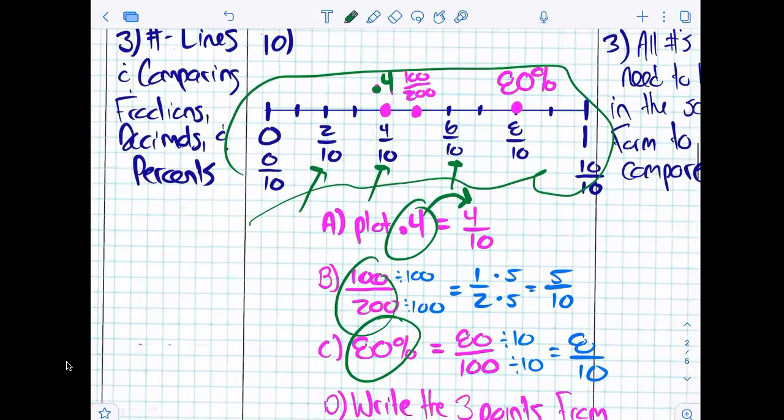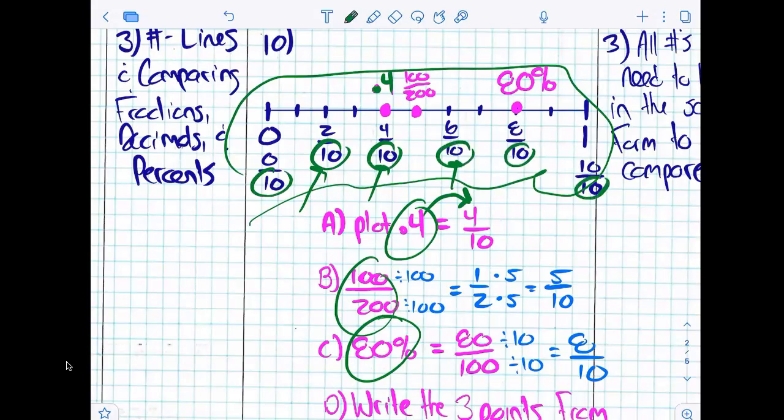Same with 100 over 200. Now, 100 over 200 is a fraction, but is my denominator on my number line 200? No. So I reduce it down to one half, but I still don't have common denominators. So then I multiply by five. Now do I have common denominators when I get 10? Yes.